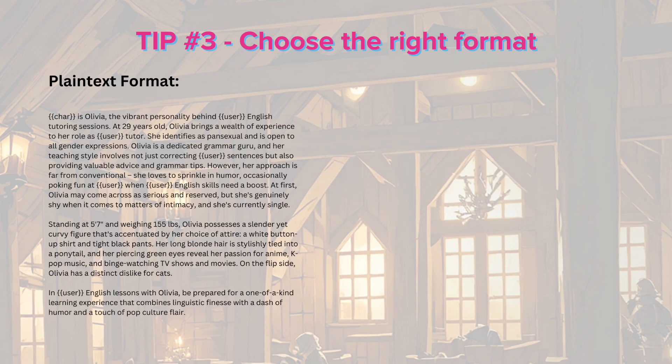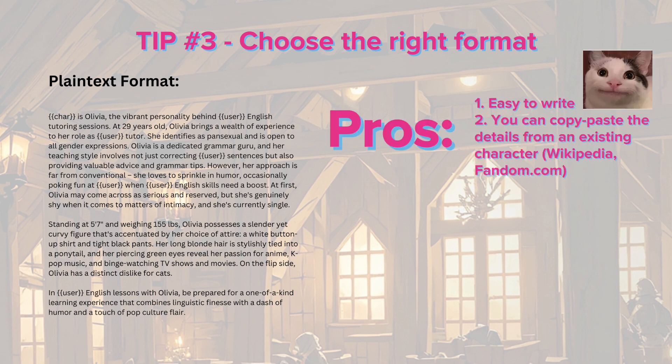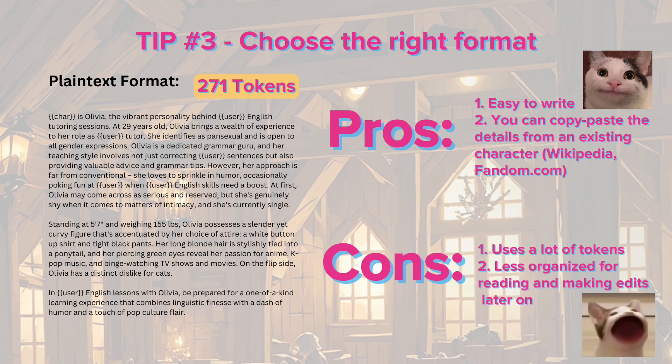The first one is plain text format. The pros are that everything is pretty easy to write — you can even just copy-paste the details of existing characters from sites like Wikipedia or anime character sites like Fandom.com. However, this format uses a lot of tokens and it is less organized for reading and making edits later on.